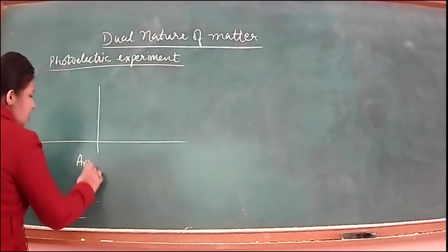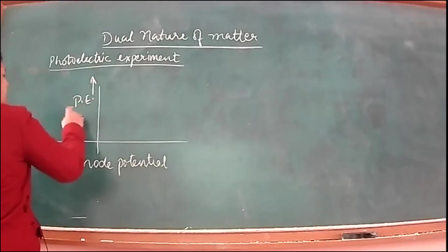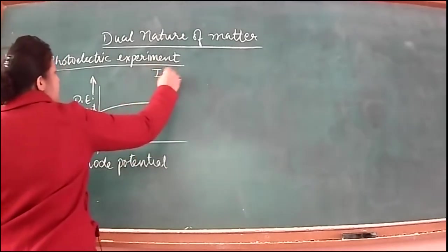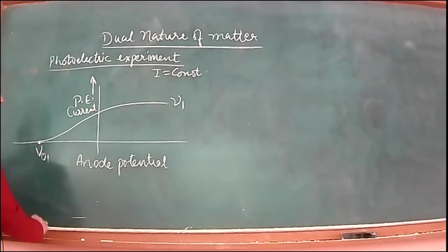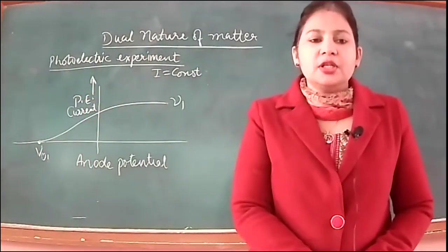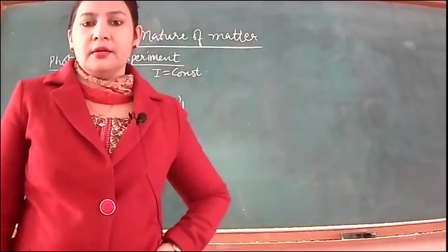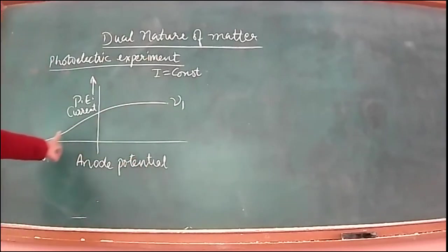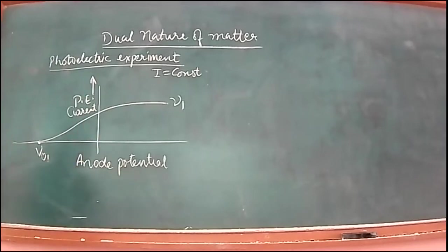The next observation involves a graph with anode potential on one axis and photoelectric current on the other, representing the number of photoelectrons. When intensity was kept constant and frequency of radiation was varying, this type of graph was obtained. This potential is called stopping potential — the reverse value of anode potential for which photoelectric current ceases to flow.